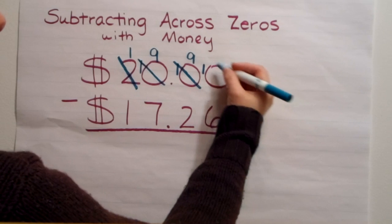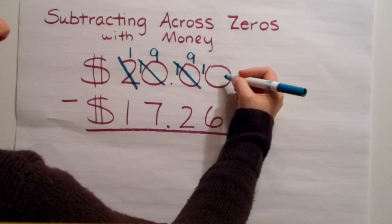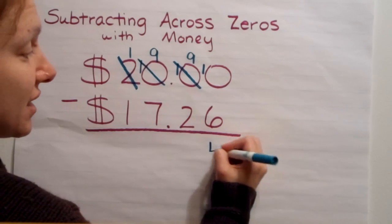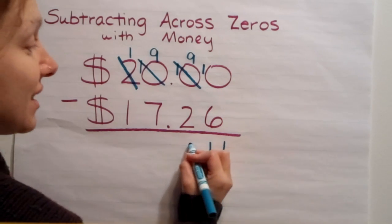And finally, I have something I can work with in the hundredths place. Ten take away six is four. Nine take away two is seven.